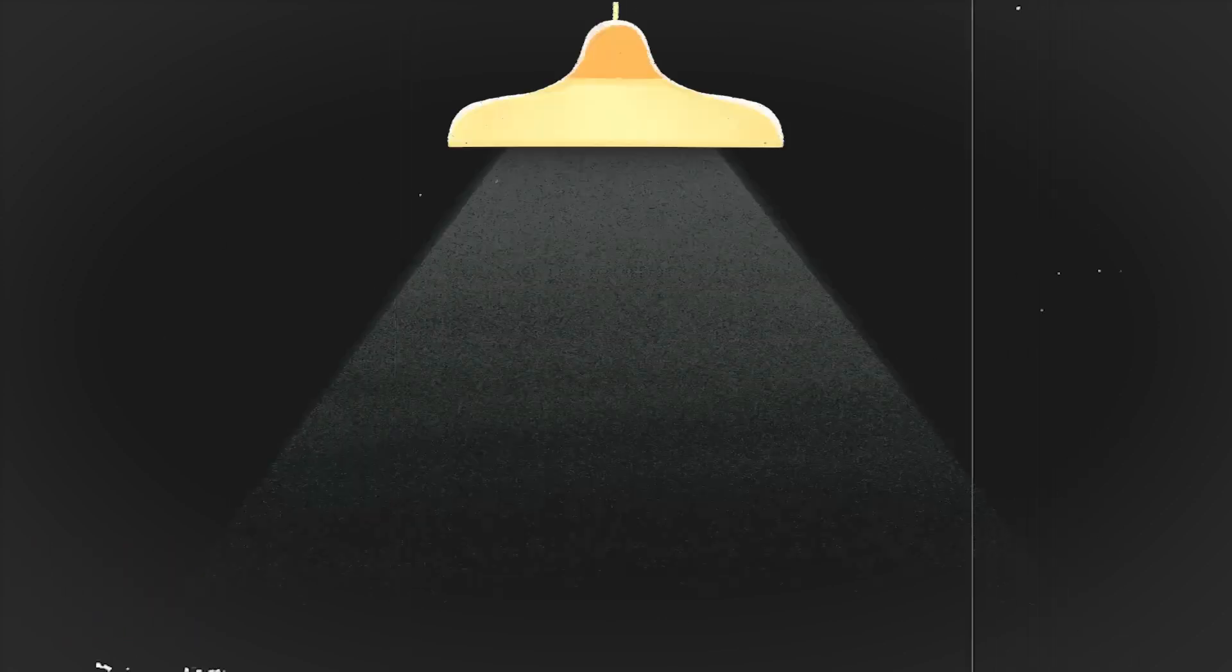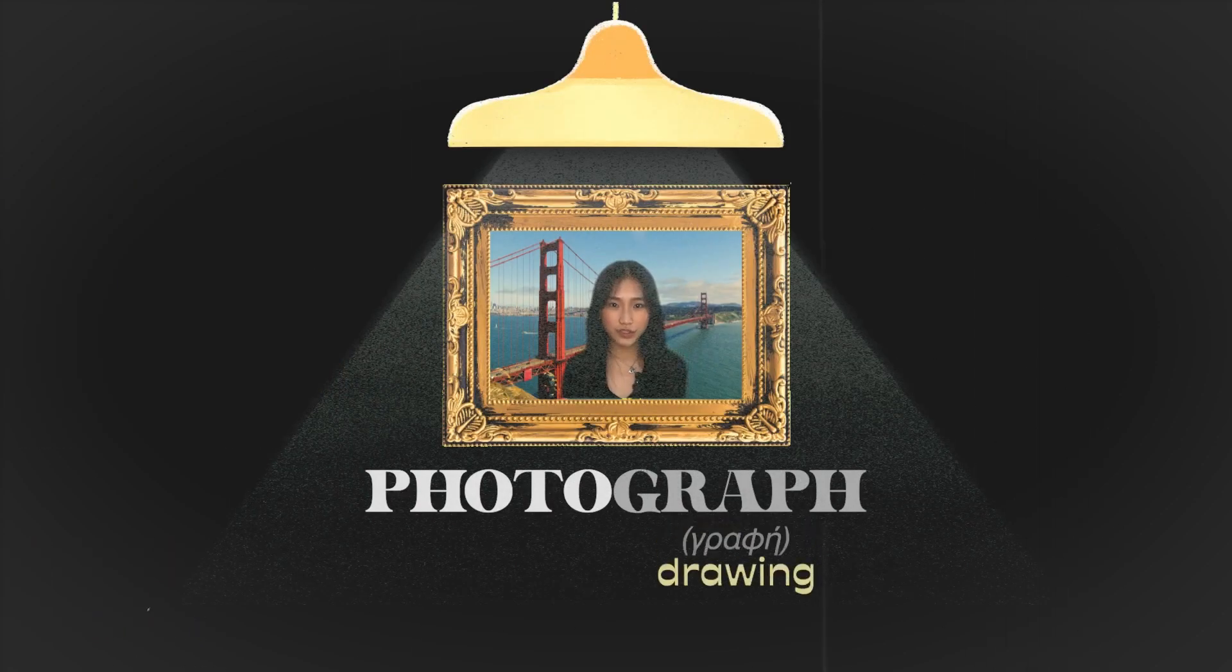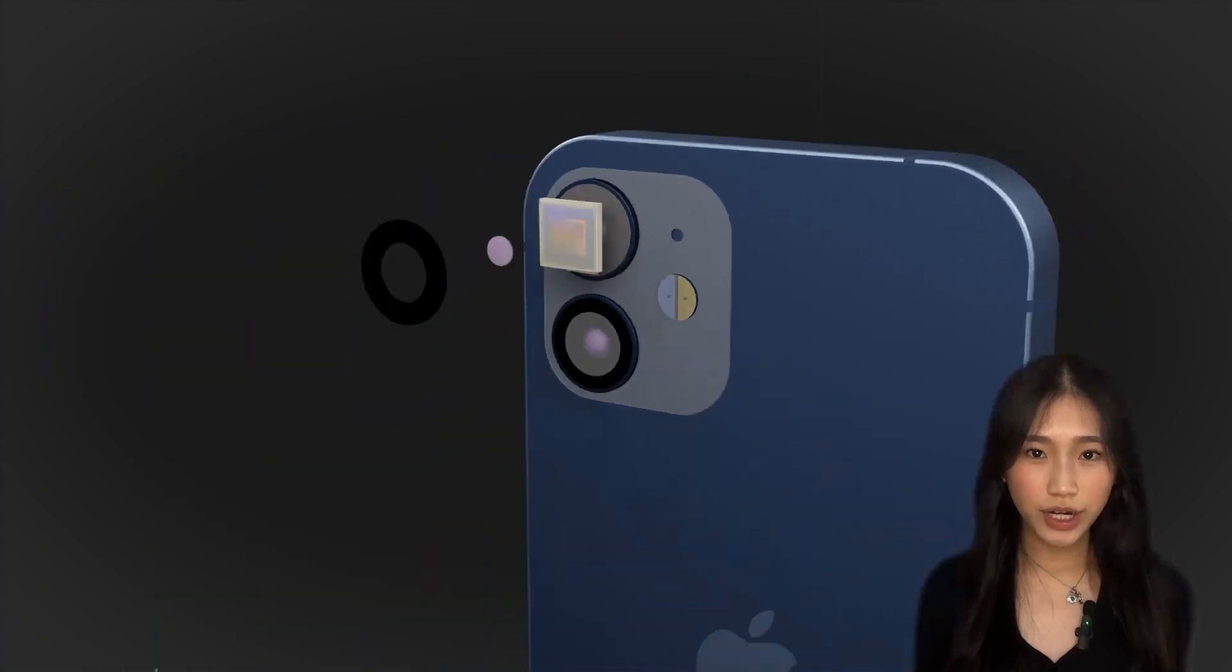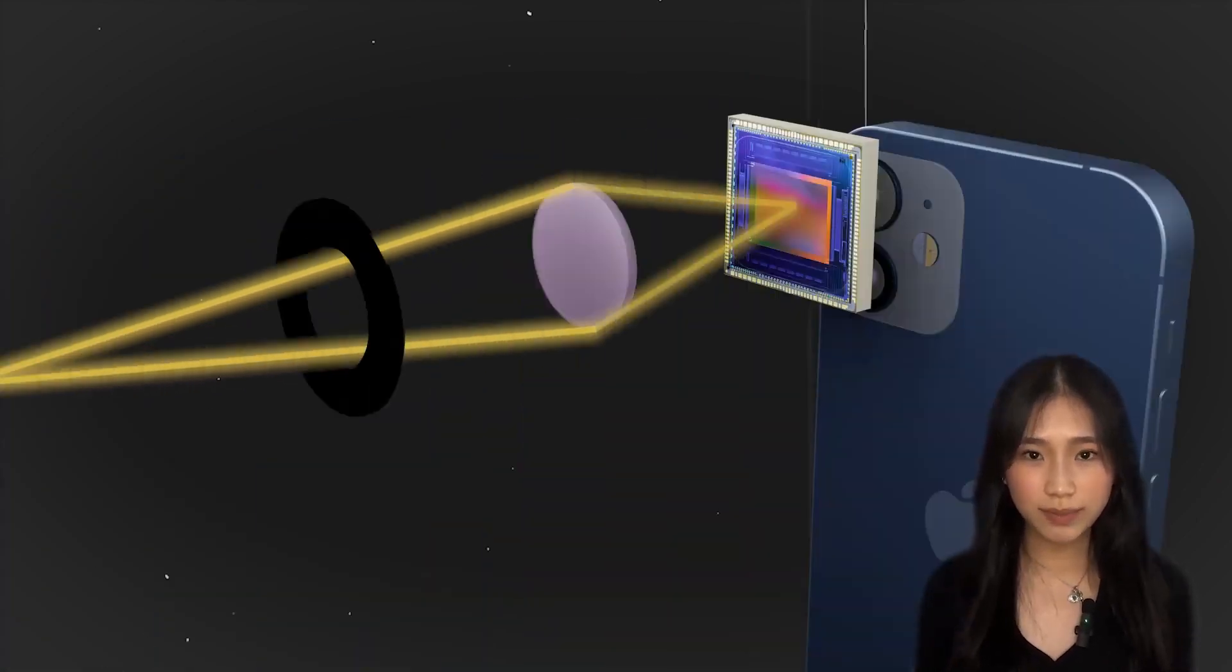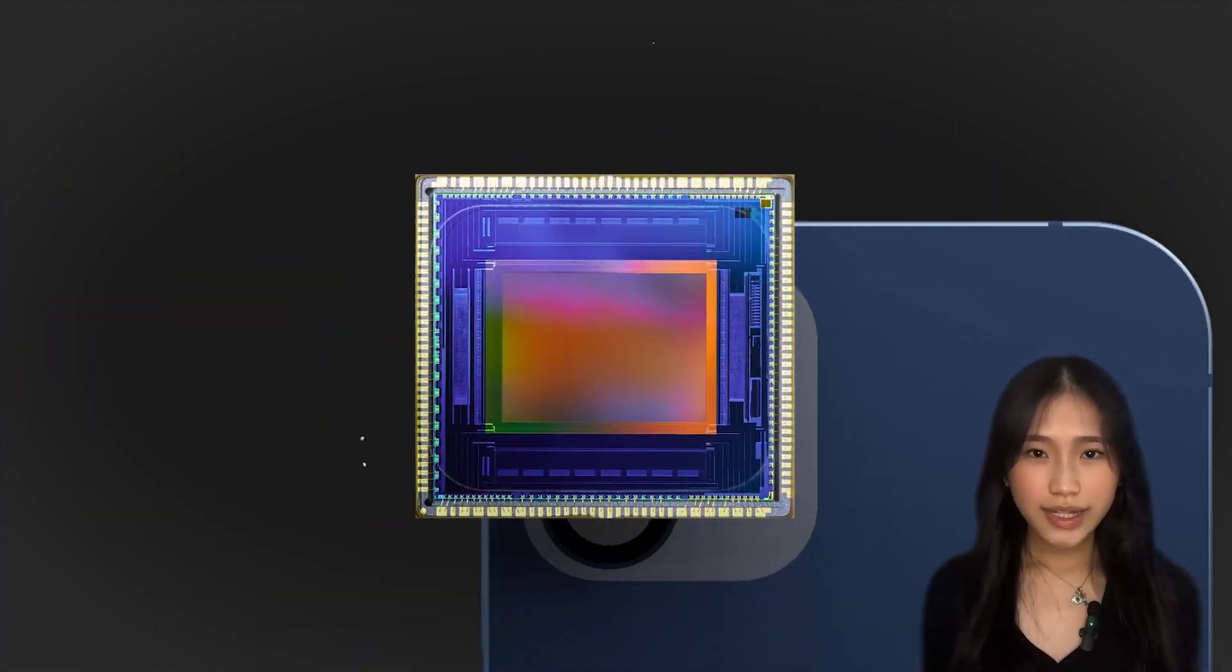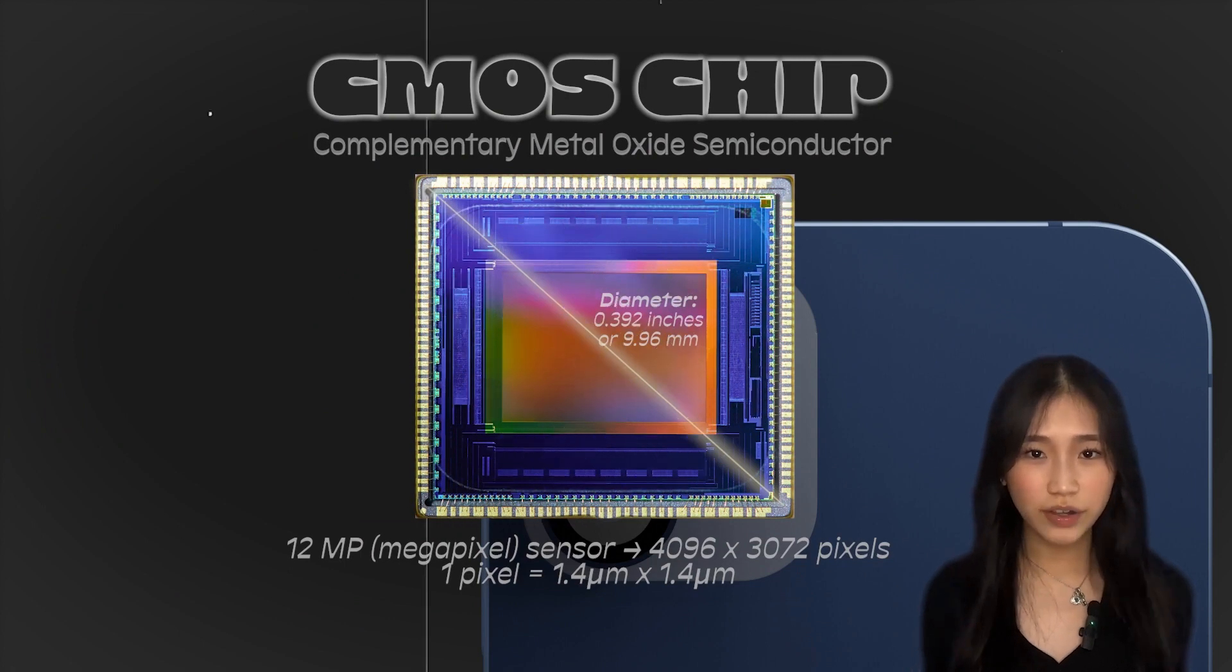It all starts with light. After all, photograph means drawing with light. It enters through an aperture and is focused via a lens arrangement onto an image sensor, a CMOS chip with millions of photodiodes, each representing a single pixel.